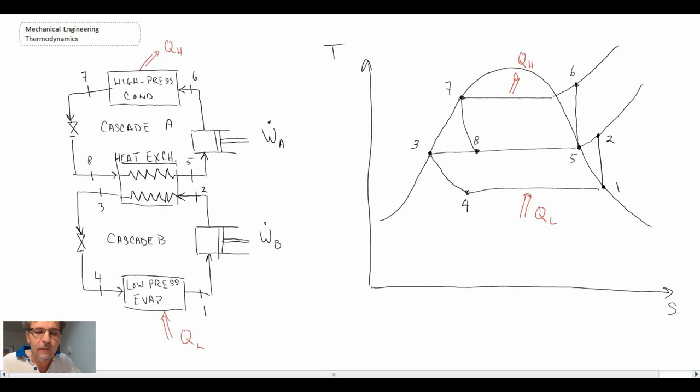Here we have the process diagram and the process schematic for our Cascade refrigeration cycle. The main difference between what we saw before is that we have two compressors, compressor A and compressor B. We have a heat exchanger operating between the two Cascades instead of what we had before with an evaporator. The evaporator is now down at the bottom.